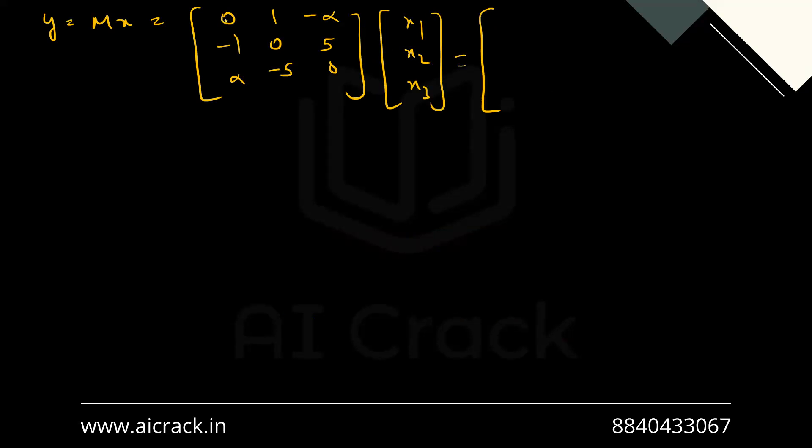That would give us basically row by column. Multiplying row by column, we'll be getting 0·x1 + 1·x2 + (-alpha)·x3. So the first term here would be x2 - alpha·x3.